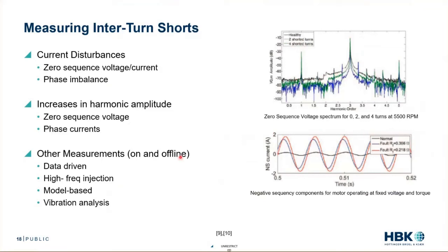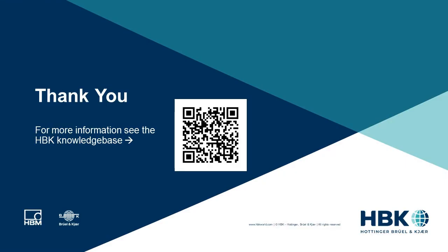There are also other measurements we can use to start to predict turn-to-turn shorts. We can have a data-driven version where we use big data. We can have high-frequency injections — that's more of an online technique. We'd have model-based approaches where we have a model running in parallel, which can be offline or online. And then we have vibration analysis where we can actually look at how that machine is vibrating. So some cool methods — we can start to figure out not only if a fault is happening, but how that's happening. Thank you.